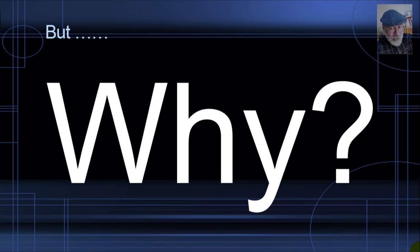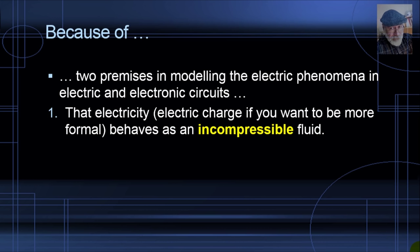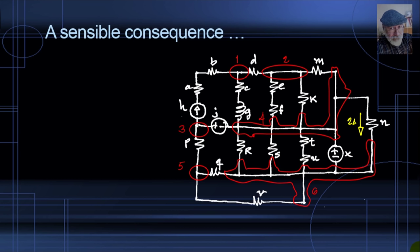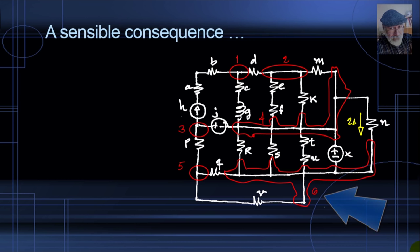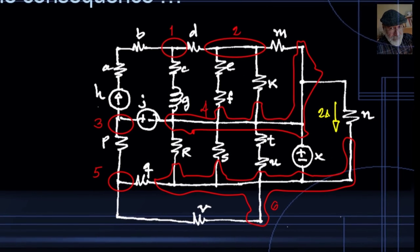Why is that? Two premises have been in place for modeling electric circuits. First, that electricity — or electric charge — behaves as an incompressible fluid. Second, that incompressible fluid fills up every cubic millimeter of every wire, every resistor, every capacitor, every source in the circuit. There is no room for more. A sensible consequence is that when we squeeze so many coulombs per second into a node — because that node is already full — the same amount of coulombs per second will be escaping through one or more of the other wires connected to the node.